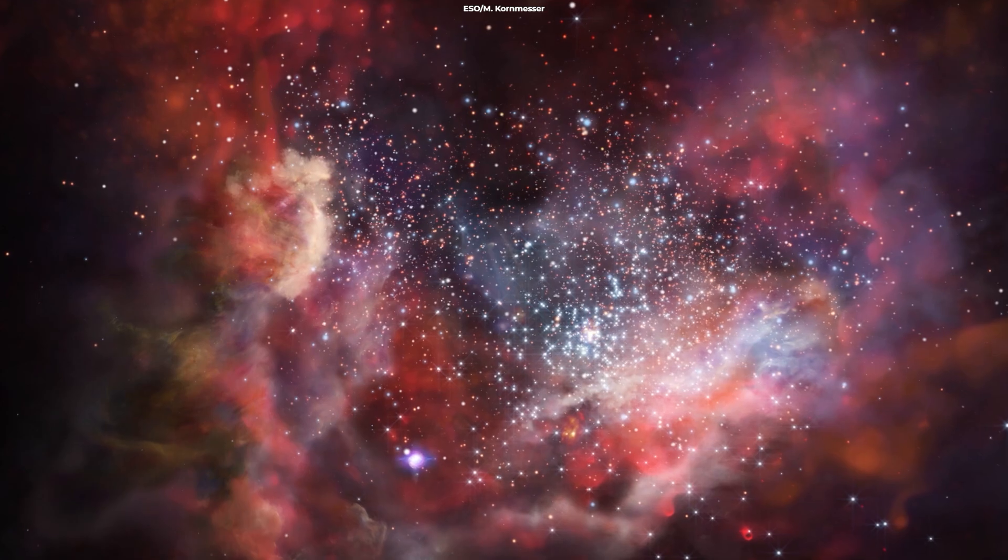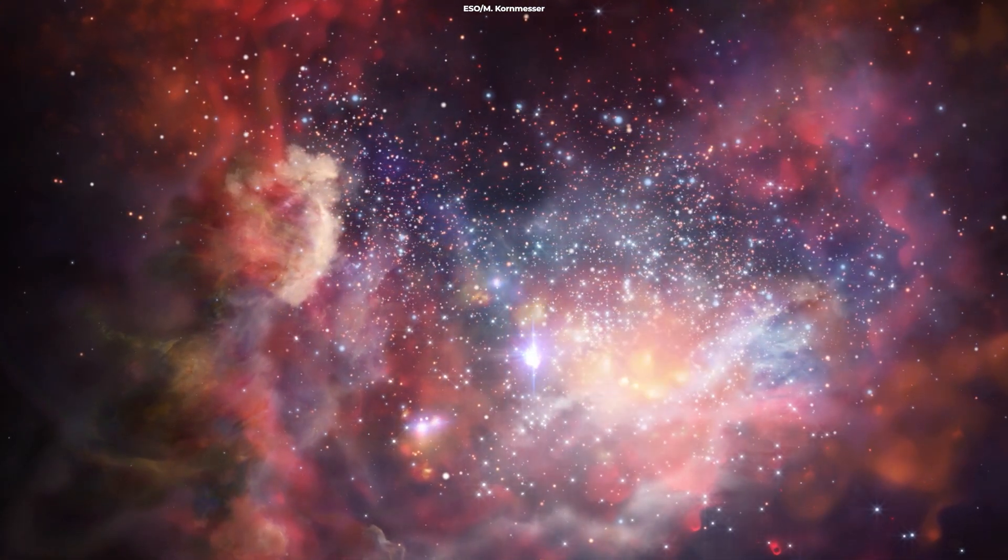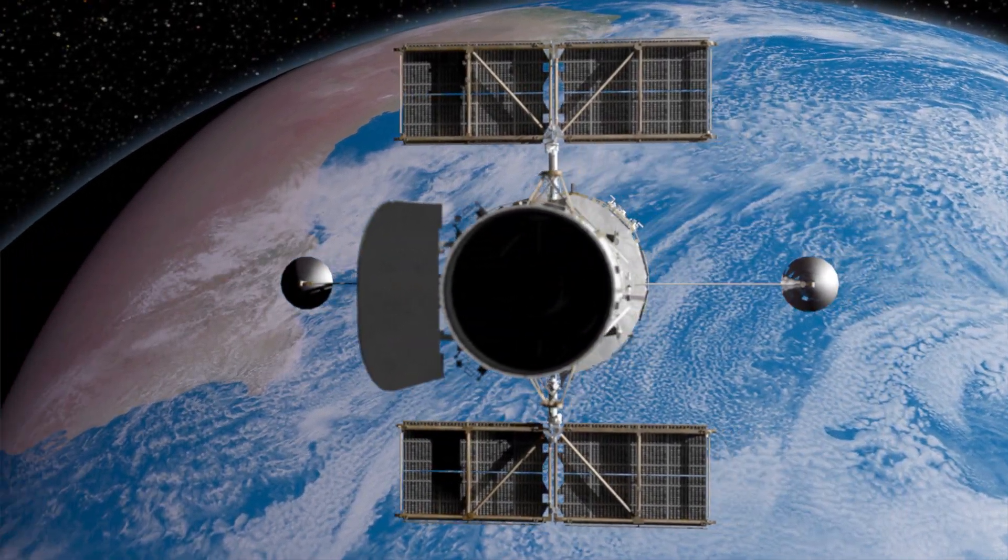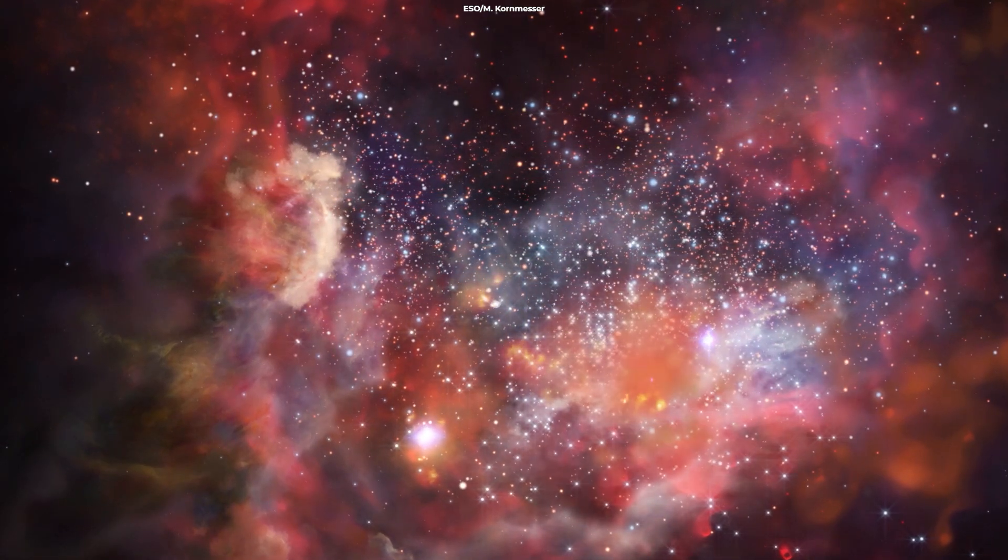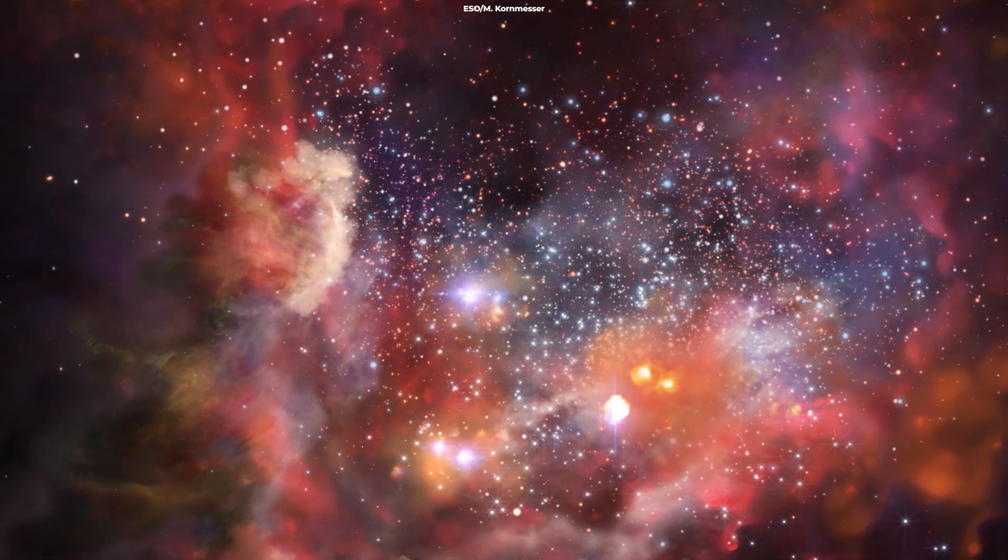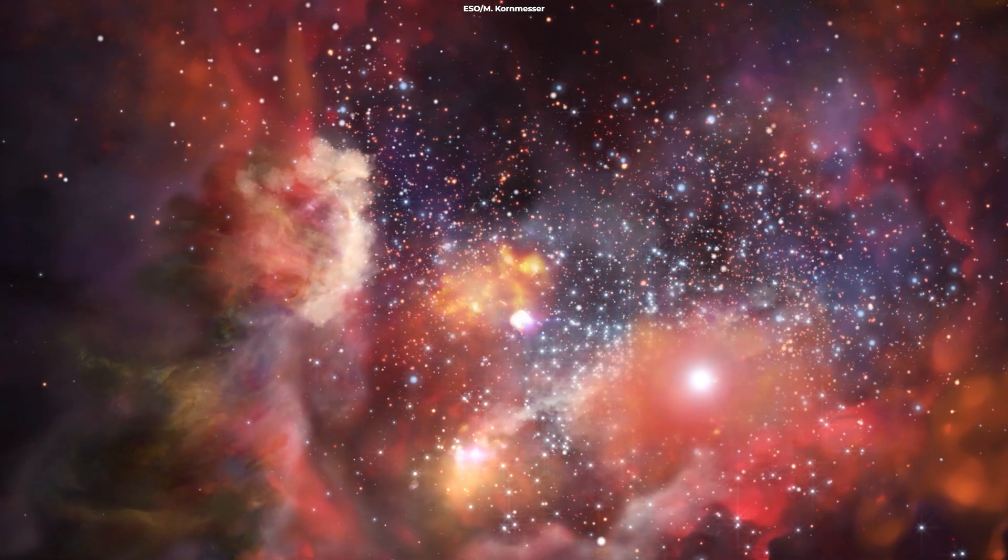Supernovae are discovered on a regular basis, with an average of about one per day being detected by modern telescopes and observatories around the world. However, the rate of discovery can vary depending on a number of factors, such as the sensitivity of the instruments being used, the size and scope of the surveys being conducted, and the location and brightness of the supernovae themselves.